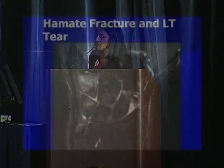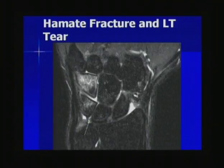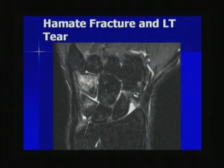Here's an example of a patient with a hamate fracture. You can see a lunotriquetral ligament tear where the ligament is avulsed off the lunate, with fluid signal traversing the ligament as well as fluid within the mid-carpal joint.